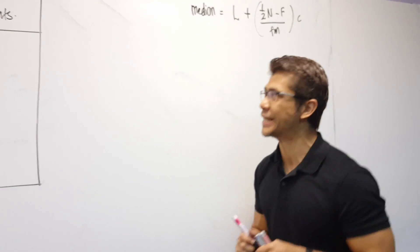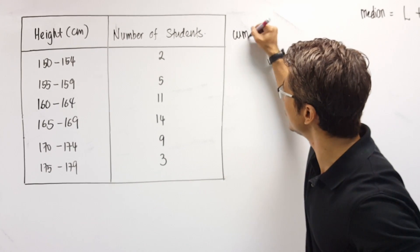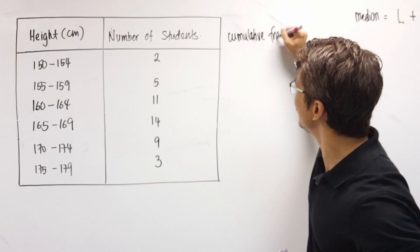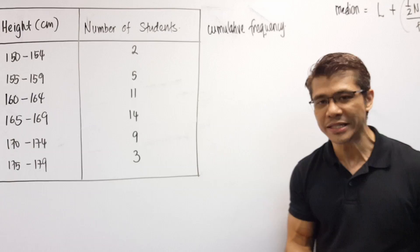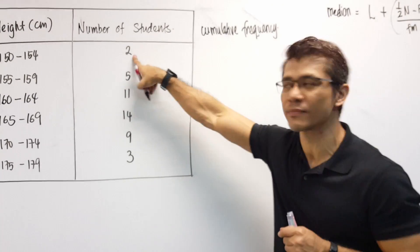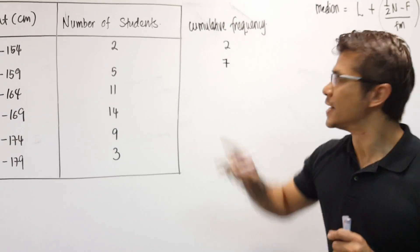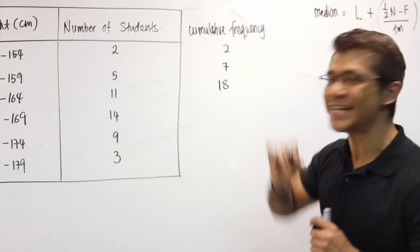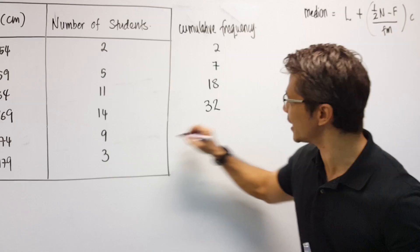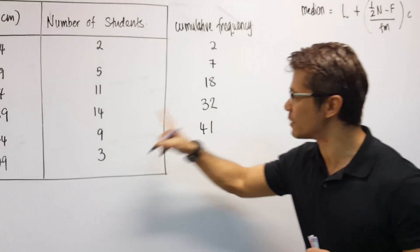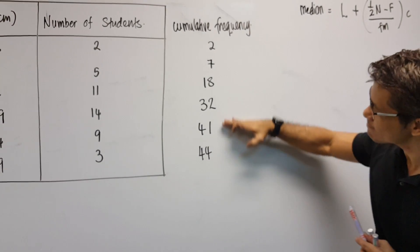Step number one. I will need to add on one more column to this table, and that would be the cumulative frequency. What exactly is the cumulative frequency? Well, it simply means I begin with the first frequency, 2, and plus 5 gives us 7. 7 plus 11 becomes 18. 18 plus 14 is 32. 32 plus 9, 41. 41 plus 3 gives us 44.